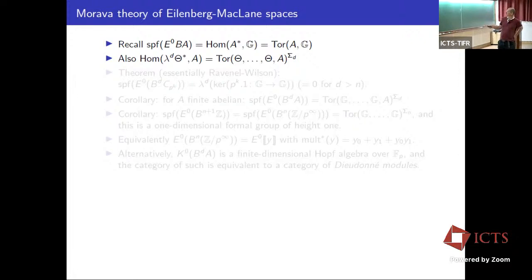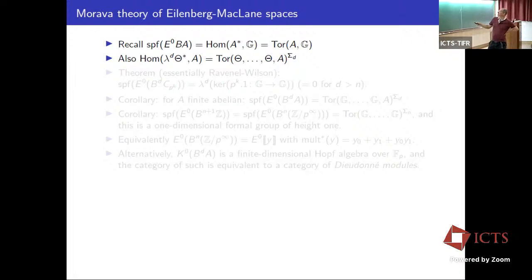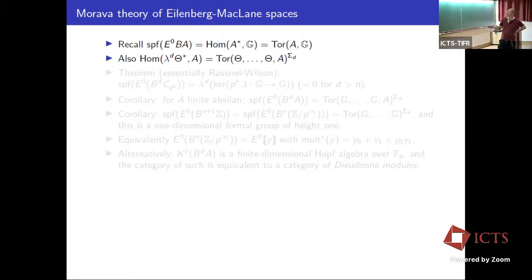More generally, replacing CP_{p^k} by an arbitrary finite abelian group A, the right way to control functoriality is to express E^0(B^d A) as an iterated Tor: D copies of G in a derived tensor product, taking the alternating part. For the last Eilenberg-MacLane space K(Z, N+1) — more or less the same as K(Z/p^∞, N) — the spf of E^0 of that is just the last alternating Tor, which turns out to be a one-dimensional formal group of height one, isomorphic to the multiplicative formal group.